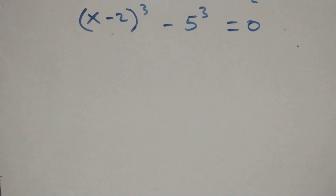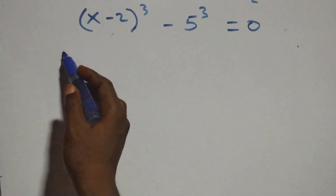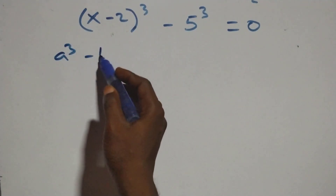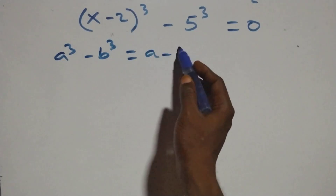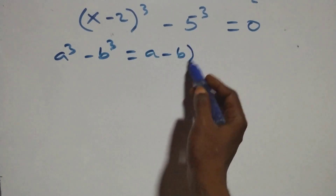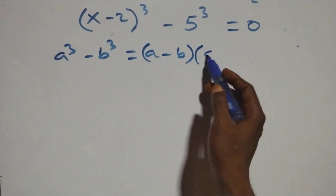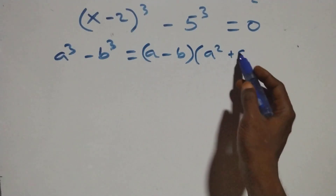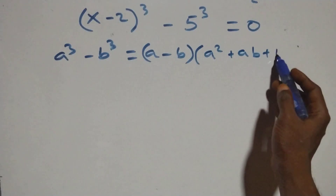Solving from the second case, this follows the identity a cubed minus b cubed, which equals (a minus b) times (a squared plus ab plus b squared).